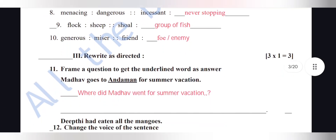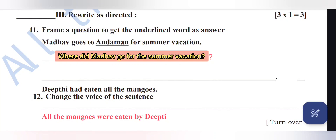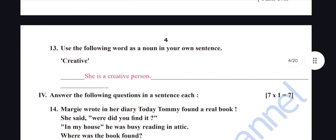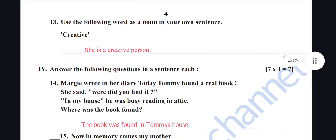Third section: frame a question to get the underlined word as the answer. 'Madhav goes to Andaman for summer vacation' — answer: 'Where did Madhav go for summer vacation?' Change the voice of 'Deepti had eaten all the mangoes' — passive: 'All the mangoes were eaten by Deepti.' Use 'creative' as a noun in a sentence: 'She is a creative person.'